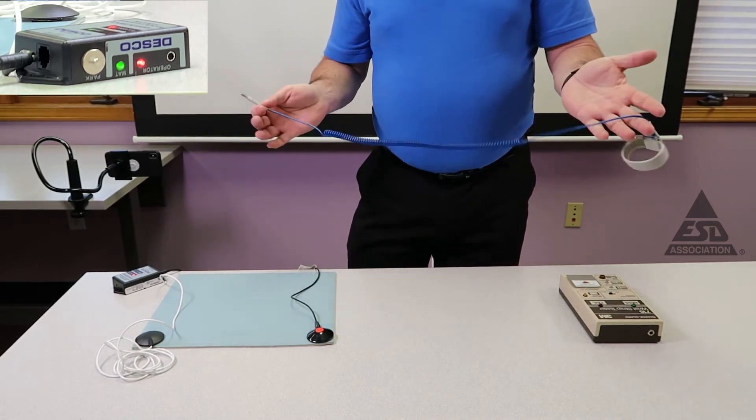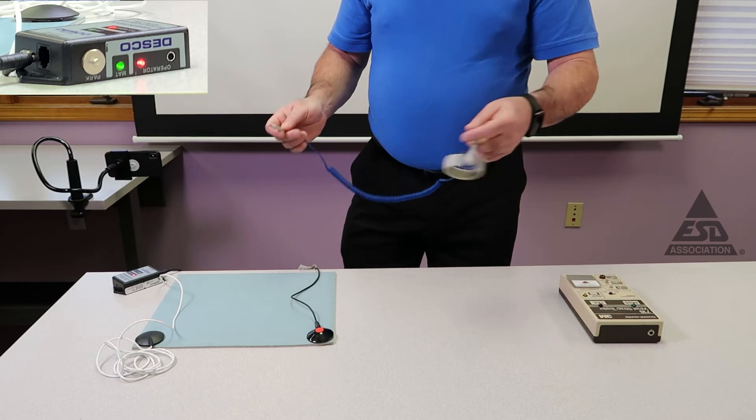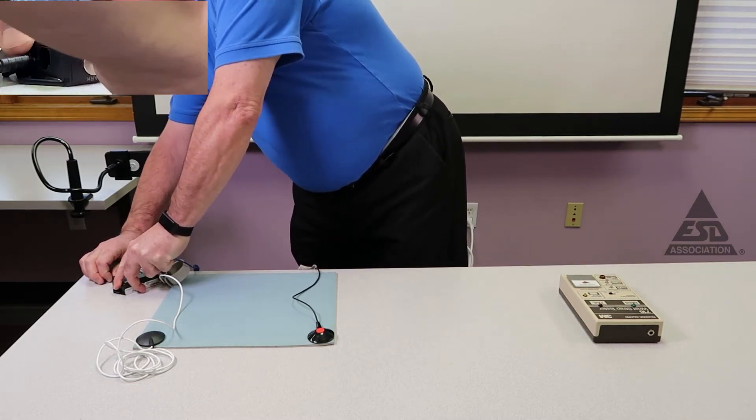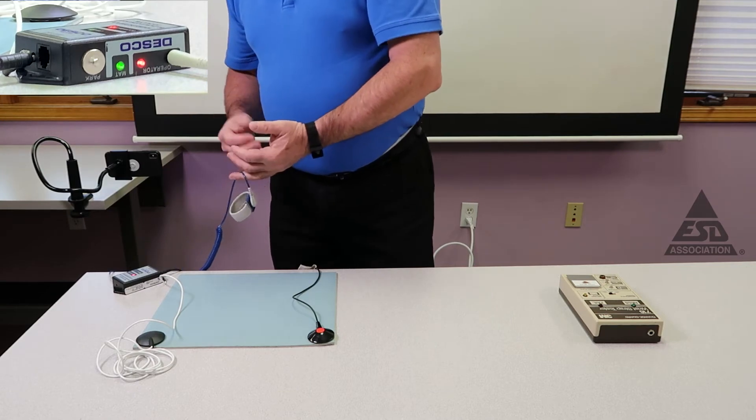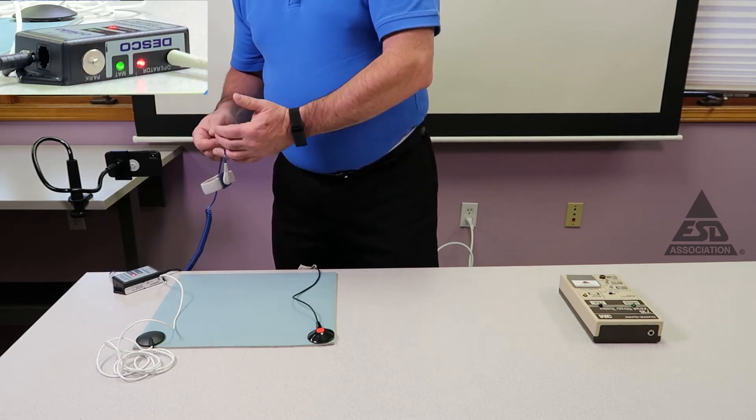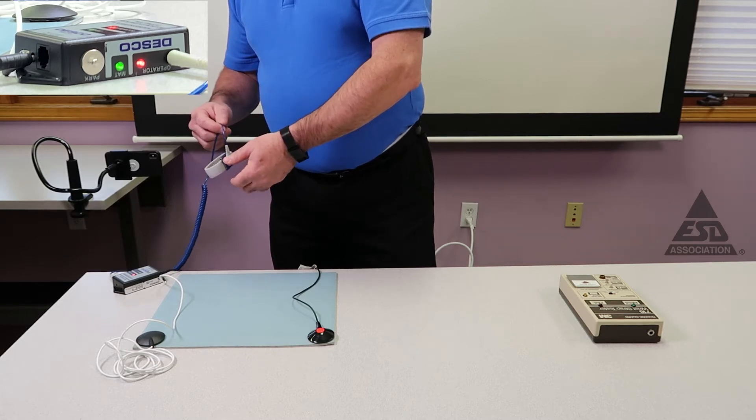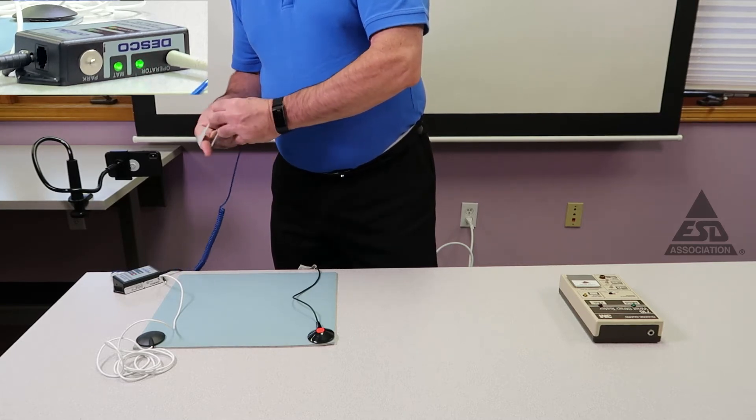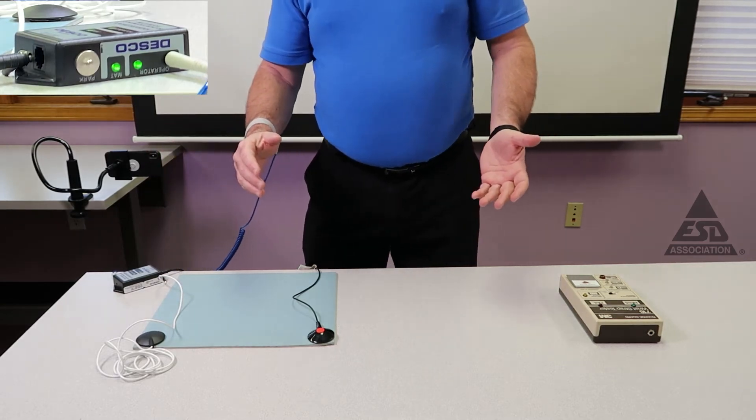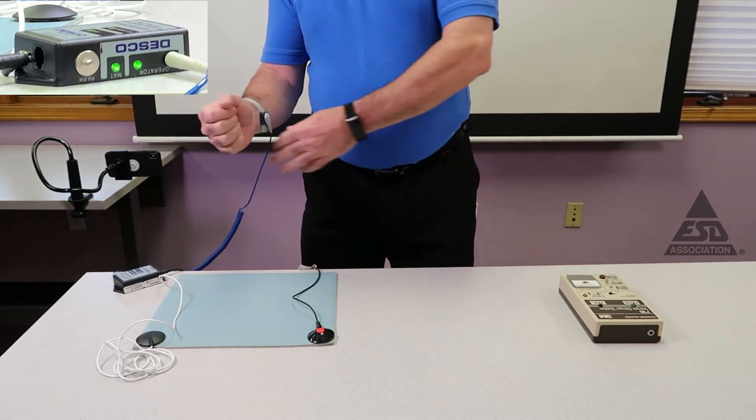Next, we're going to plug the wrist strap in. Again, I'm not going to put myself in the loop. We'll see what happens. It says red, so it's not connected. Now I'll put my wrist strap on. And you can see that now it knows that I'm in the loop and that my wrist strap's connected and working.